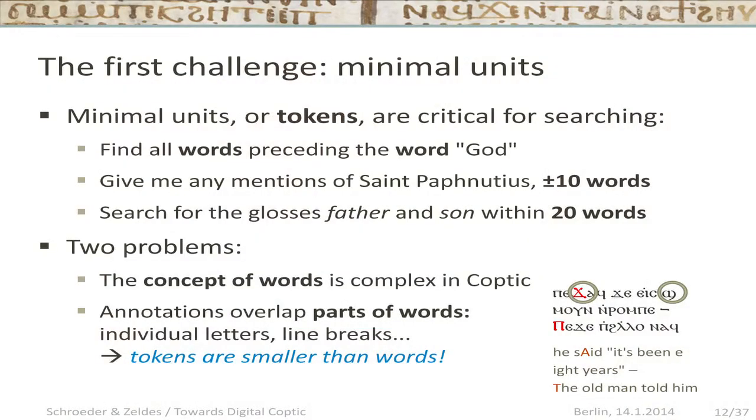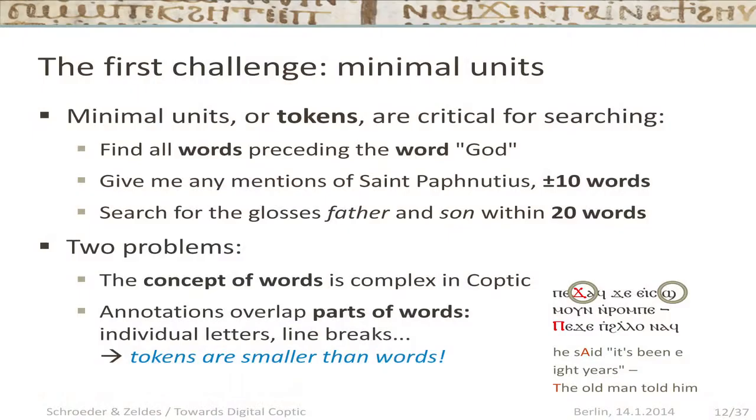The first problem when using corpus linguistics technology to process these things has been segmentations. In corpus linguistics software, things are typically based on the idea of words — the smallest unit of analysis is the 'token,' usually the same as a word. You expect queries like 'give me all words preceding the word God' or 'mentions of St. Paphnudius plus-minus 10 words.' All these rely on a clearly defined concept of word. The concept of word is complex in Coptic, and annotations can span parts of words — using the smallest unit you sometimes end up with individual characters, such as a single character in the middle of a word, or the first character of a word that continues on the next line.